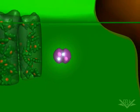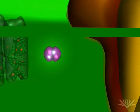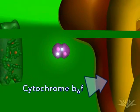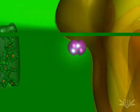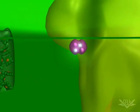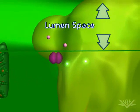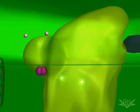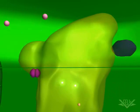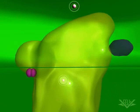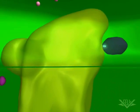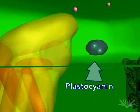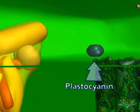Plastiquinone QB then transfers the two electrons to the cytochrome B6F complex. The two protons it picked up are released into the lumen. These transfers are coupled with the pumping of two more hydrogen ions into the lumen space by cytochrome B6F. The electrons are next transferred to plastocyanin, another mobile carrier.